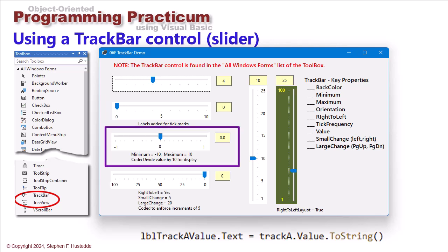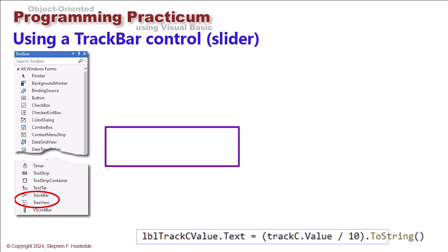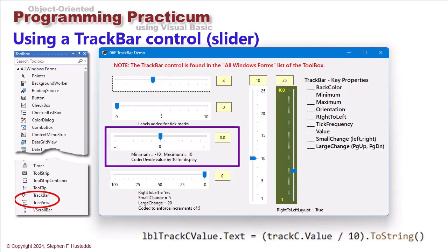On this third one I want to select values from minus one to positive one but in increments of one-tenth. Now the track bar only supports integers, so here's my trick: I set the minimum at minus 10 and the maximum at positive 10 and the value at zero.